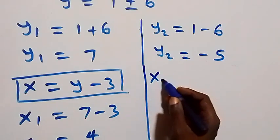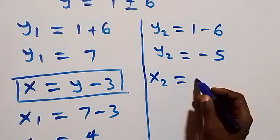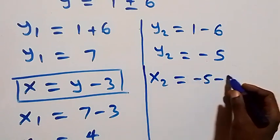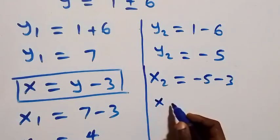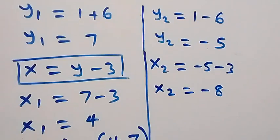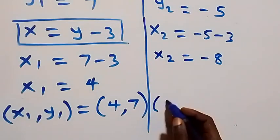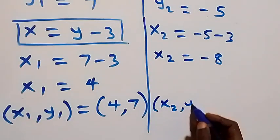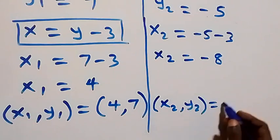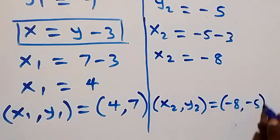For the second value, x₂ equals y₂ minus three, which is negative five minus three, so x₂ equals negative eight. The second set of solutions is (x₂, y₂) equals (−8, −5). So we have these two solution sets.